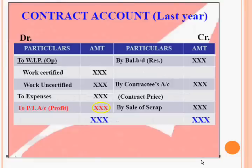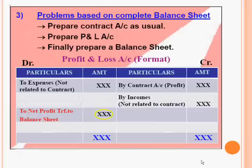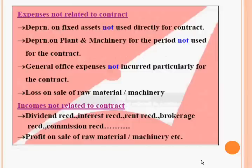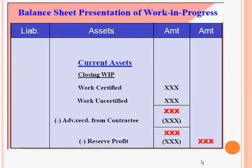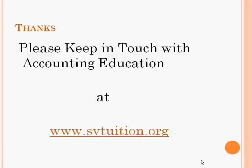This is the contract account for the last year, and the total amount will go to the profit and loss account. In the profit and loss account, expenses not related to the contract are debited and income not related to the contract is credited, with the net amount transferred to the balance sheet. In the balance sheet, work in progress is shown as a current asset: work certified plus work uncertified, less advance received from the contractee, less reserve profit. Thanks — please keep in touch with Accounting Education.